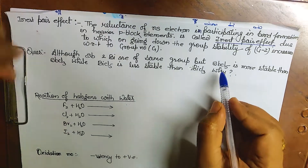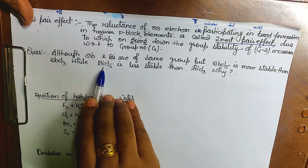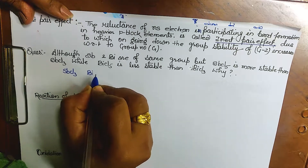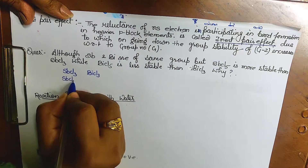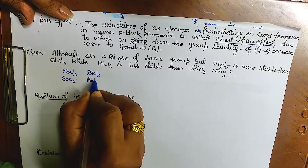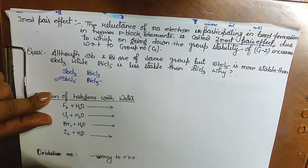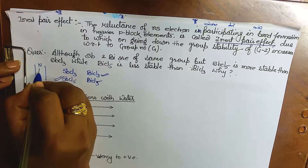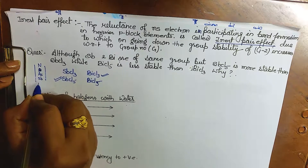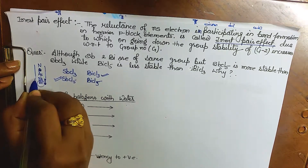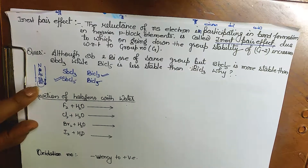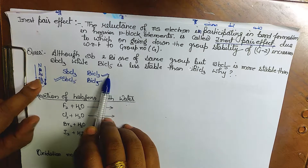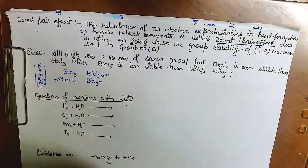Consider this question: Sb and Bi are in the same group, yet SbCl5 is more stable than SbCl3, while BiCl5 is less stable than BiCl3. Since bismuth is further down the group, the stability of the lower oxidation state (group number minus 2) increases, making BiCl3 more stable. For antimony (higher up), SbCl5 is more stable.